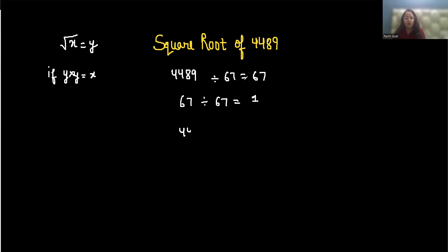So we can write 4489 as 67 squared. Since 4489 is 67 times 67, the square root is simply 67.